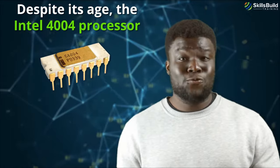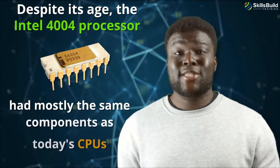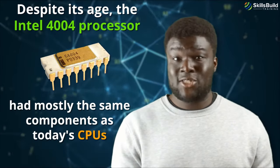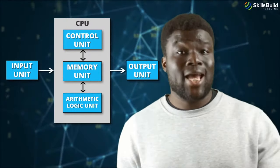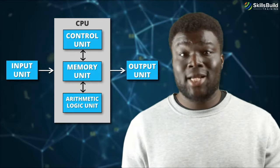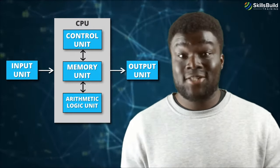Despite its age, the Intel 4004 processor had mostly the same components as today's CPUs. The Arithmetic Logic Unit, or ALU, is in charge of performing arithmetic operations as well as logical functions. The Control Unit, or CU, organizes the CPU instructions and tells the ALU, the memory, and the input and output devices what to do.